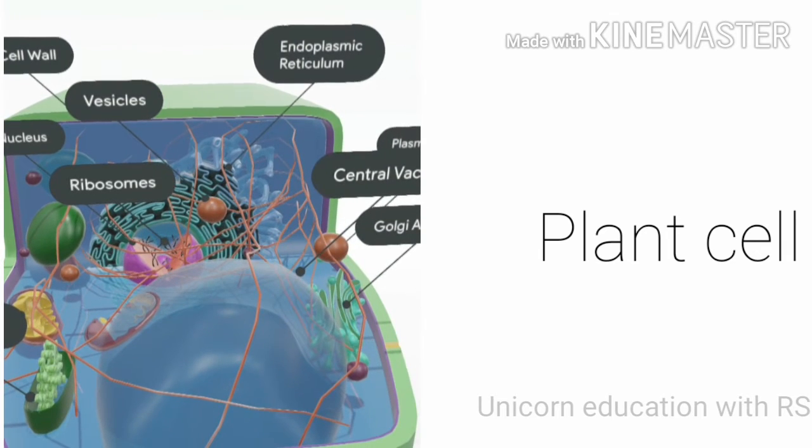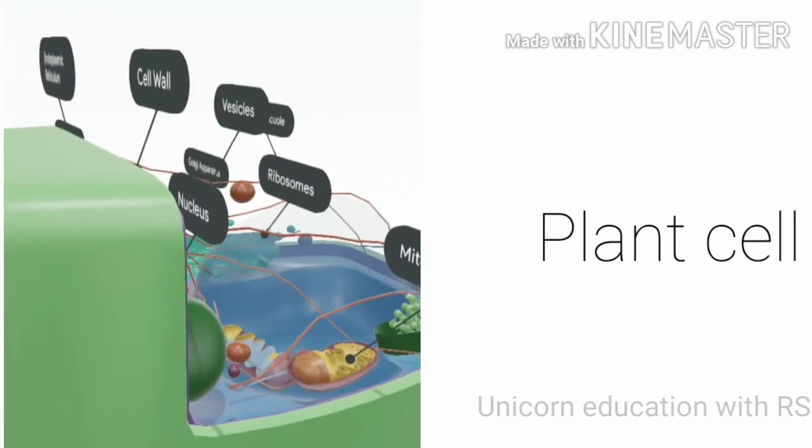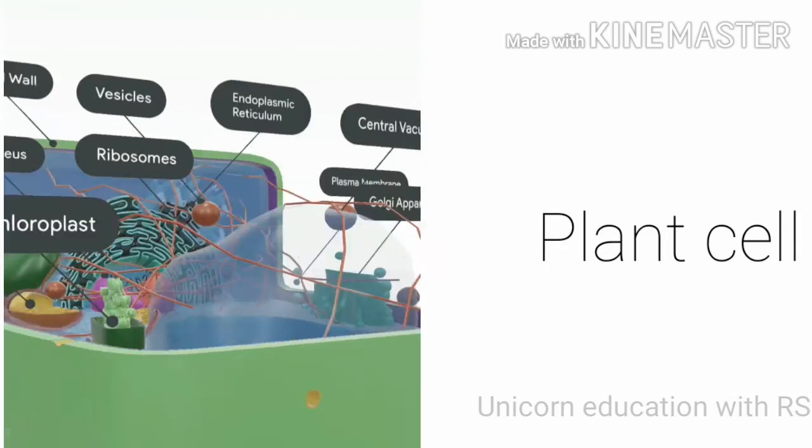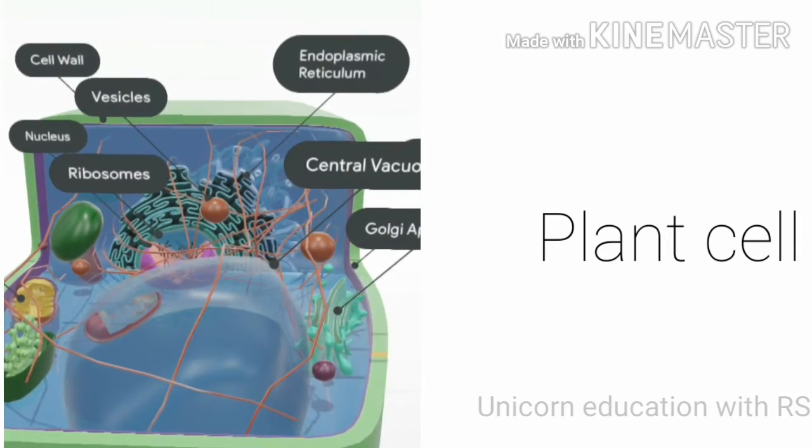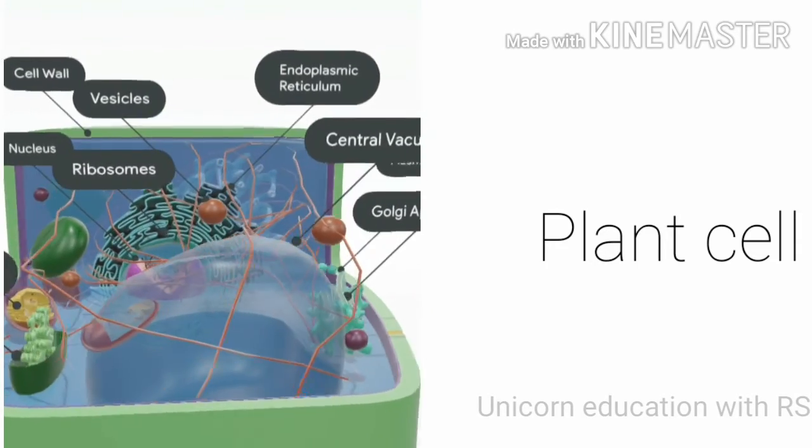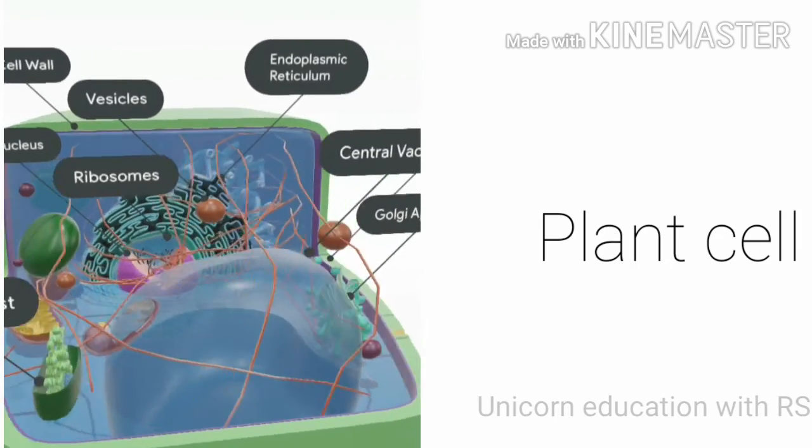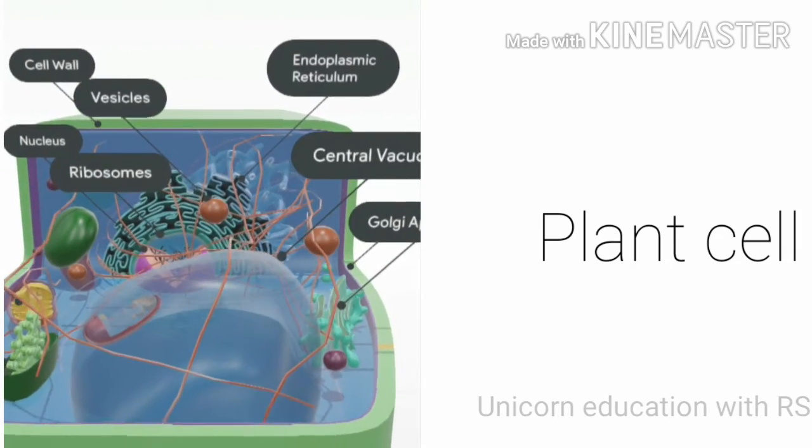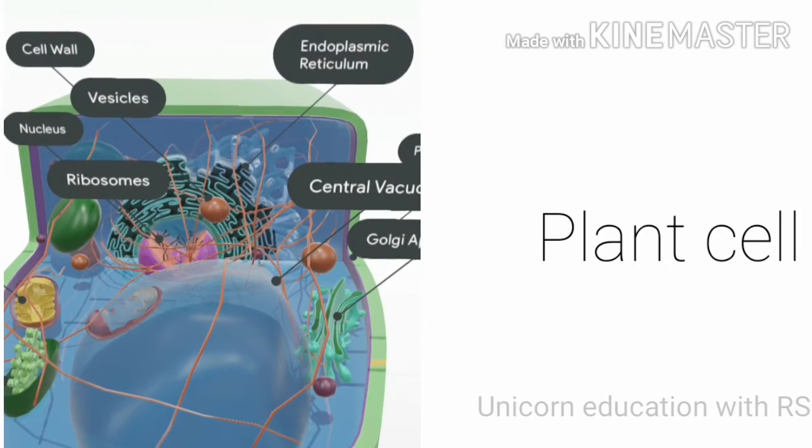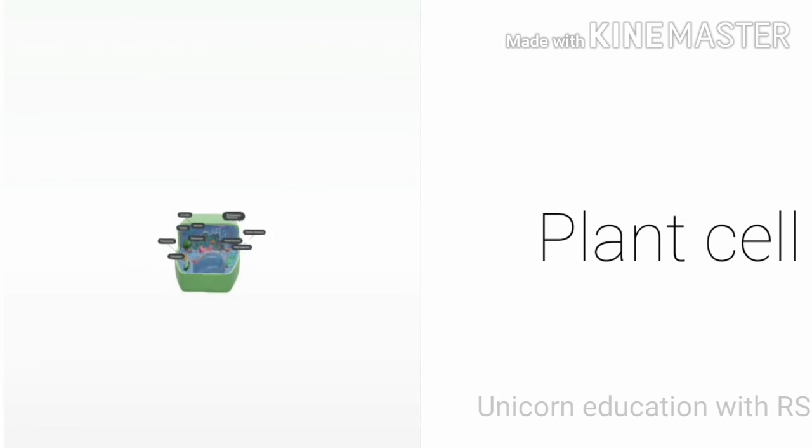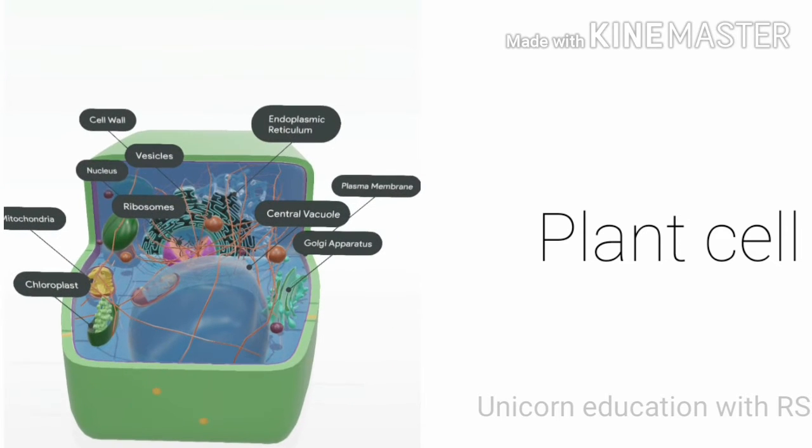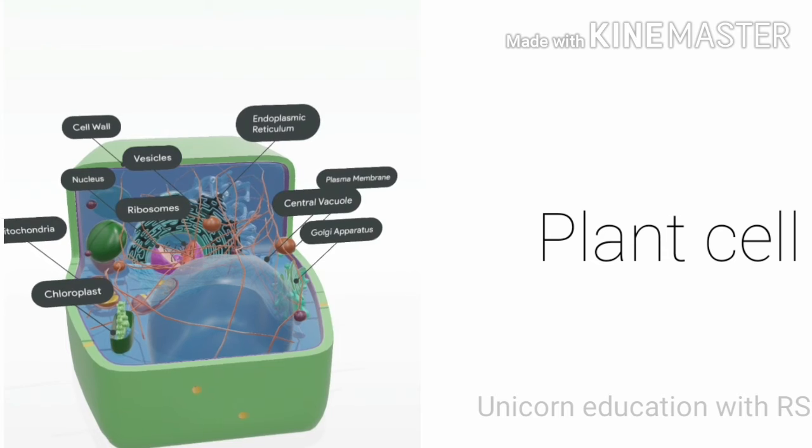The plant cell is covered by cell wall, cell membrane, and plasma membrane. This is the full view of plant cell.